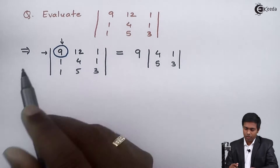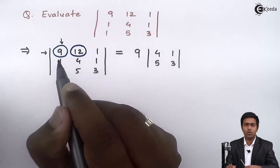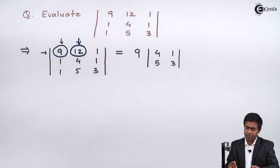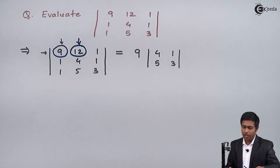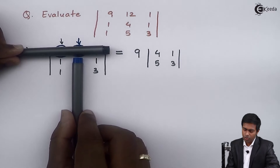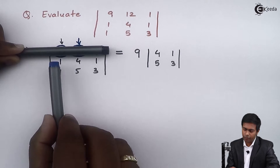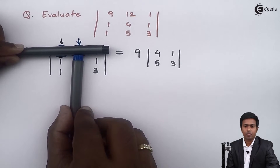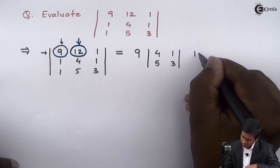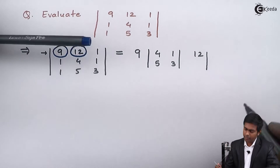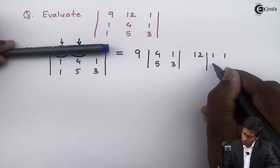Next we select the second element, which is in the first row and second column — that is 12. Since 12 lies in the first row and second column, we hide the first row and second column. By hiding it we get 4 elements: 1 and 1 in the first row, and 1 and 3 in the second row. So we multiply 12 with the determinant of 1, 1, 1, 3.